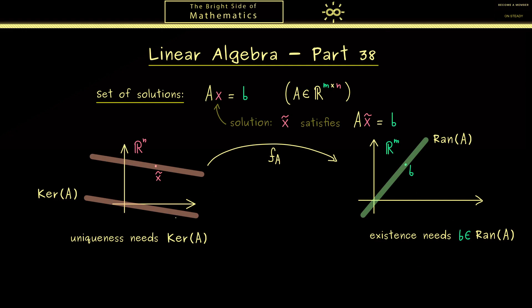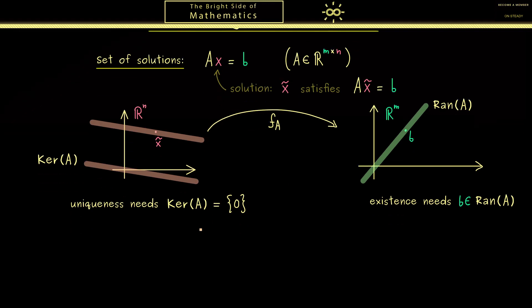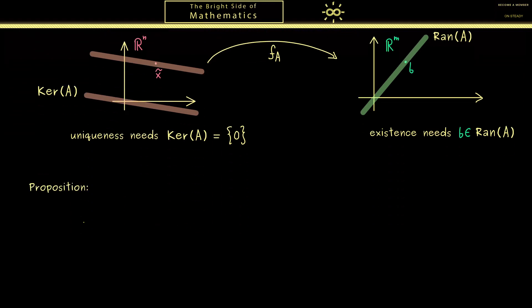On the other hand, the uniqueness for a solution we can only have if the kernel is trivial, which means it's the smallest possible subspace, so just the zero vector.